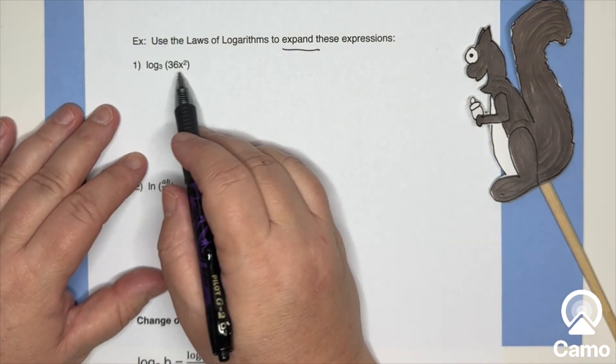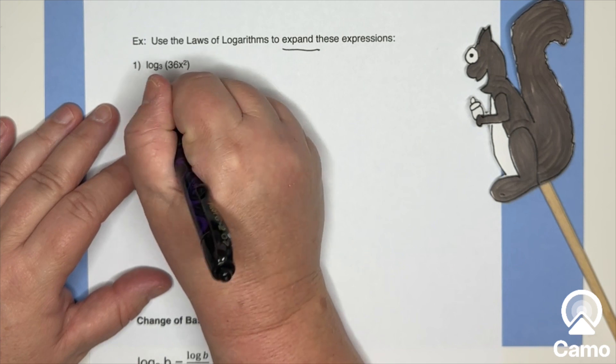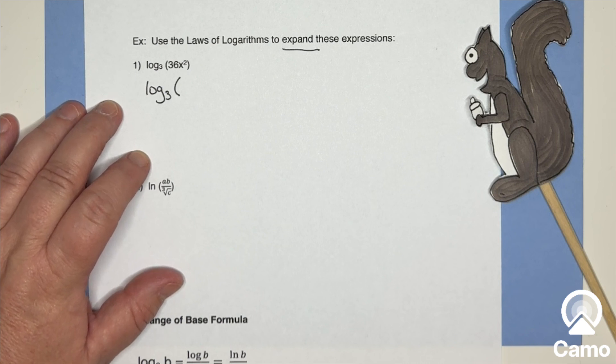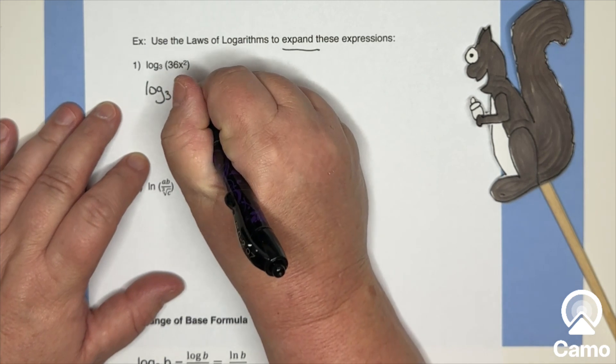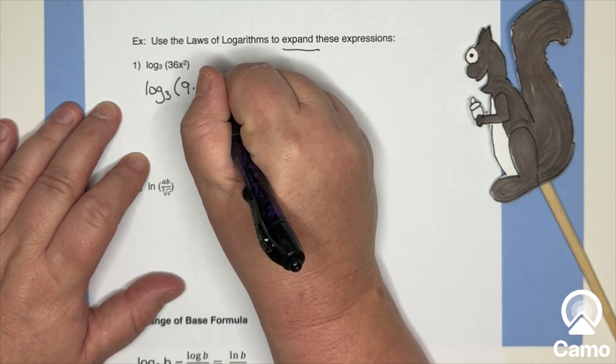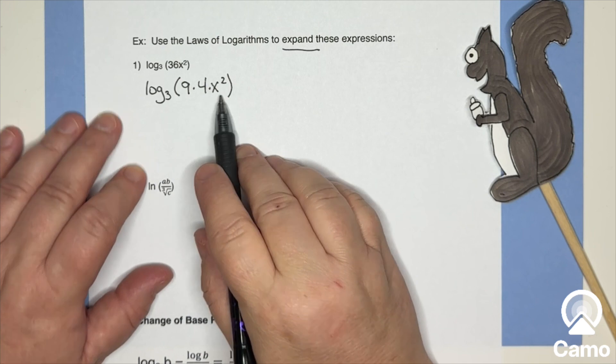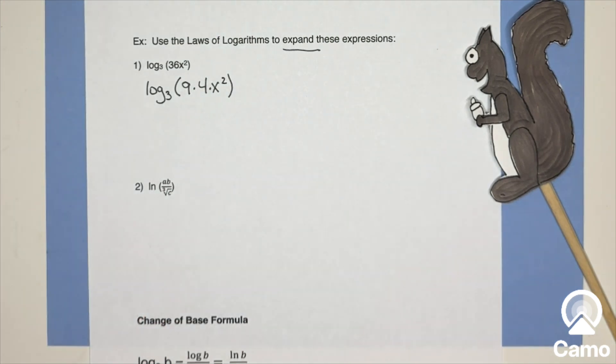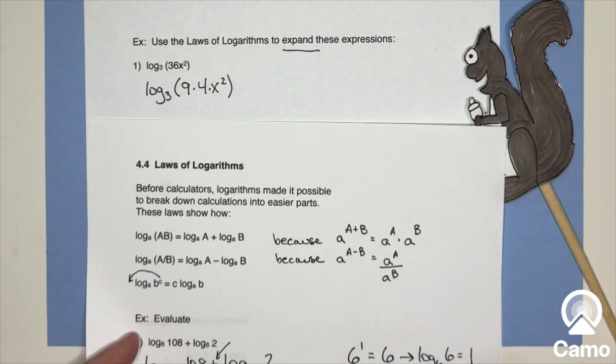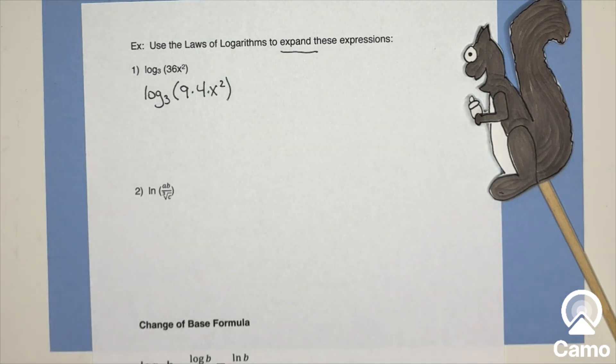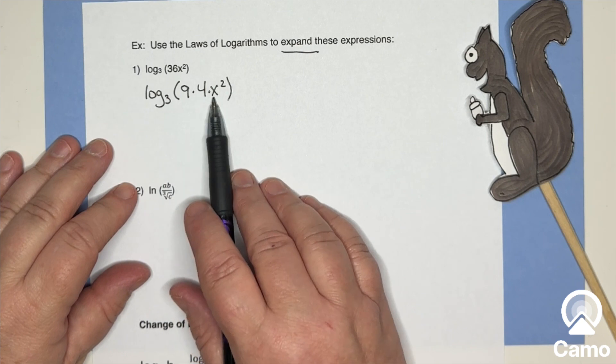I've got log base three of this. So the first thing I'm going to do is I'm going to take a look at what's going on inside. 36 is not a power of three. But what is a power of three? Nine. You're right. So I'm going to try to come up with a nine. 36 is nine times four. And that's times x squared. Now, if I have things multiplied inside the parentheses, I can break them out separately and add them.